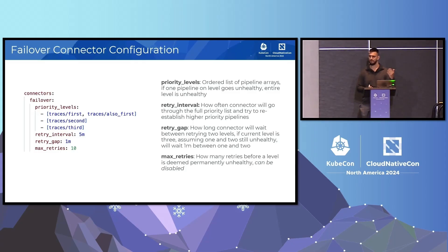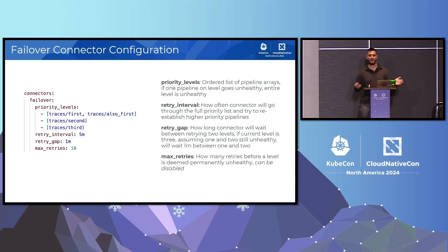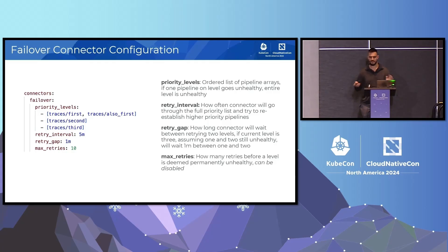For example, if I'm currently on level three and the retry interval triggers, it'll first retry level one, and if that fails, wait the retry gap and then try level two. Max retries is how many retries before we consider a pipeline permanently unhealthy for the current collector run. This can be disabled.